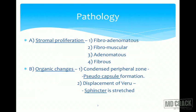Now, pathology. There are two main changes that occur in the prostate gland. One is the stromal proliferation or change in the prostatic parenchyma, and the second is organic change. In stromal proliferation, there are four different types of changes: fibroadenomatous, fibromuscular, adenomatous, and fibrous.